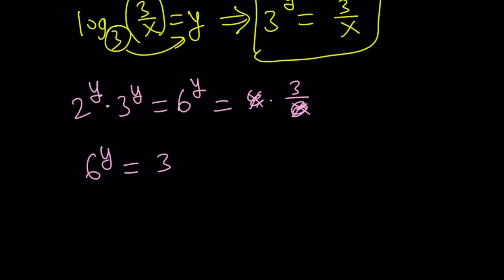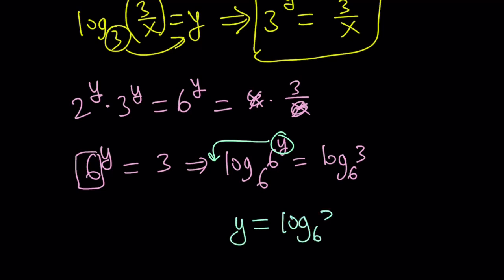Now at this point, you can log both sides or ln both sides, or you can just use base 6. Base 6 makes sense because our base is 6 here. So log 6 to the power y equals log 3, both in base 6. Now we can move this to the front. That's going to give me y times log 6 base 6, which is 1. So this is y equals log 3 base 6.